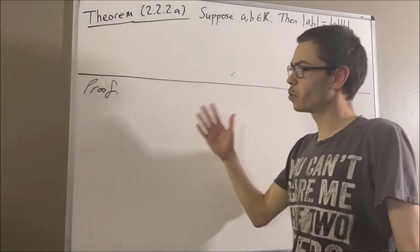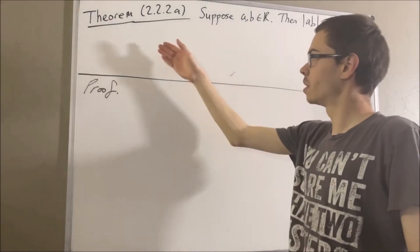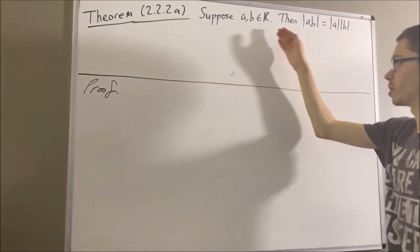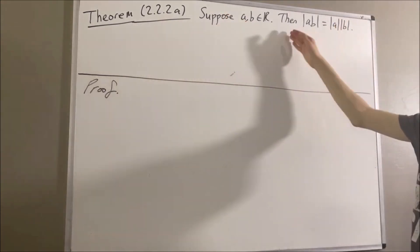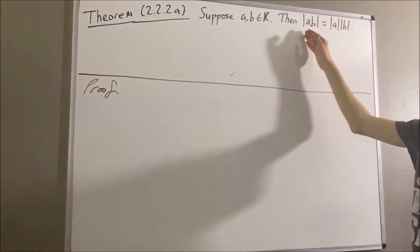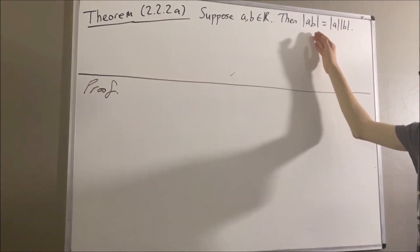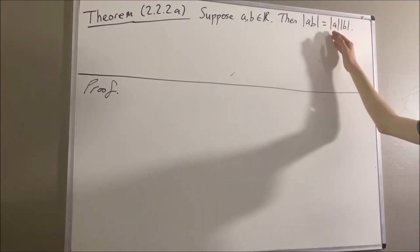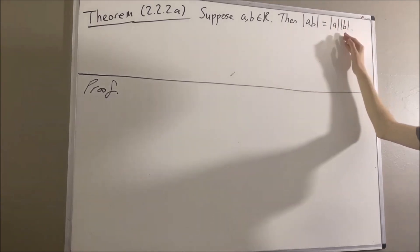In this video, we are going to prove the following theorem. Suppose A and B are real numbers. Then the absolute value of A times B is equal to the absolute value of A times the absolute value of B.